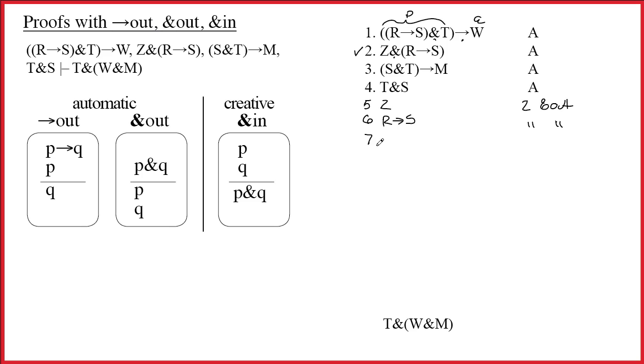So, what I'm going to do is take line four and break it up. And turn it into T and S. Of course, that'll be four ampersand out done twice.